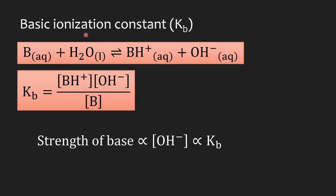For the basic ionization constant Kb, we represent a base as B. In water, the base accepts a proton from water, so the base becomes its conjugate acid — gaining one more proton with a positive charge — and hydroxide ion is released. The expression for the equilibrium constant is Kb, which equals the concentration of the conjugate acid multiplied by the concentration of hydroxide, divided by the concentration of the base, all at equilibrium. The strength of the base is related to the concentration of hydroxide and also to the value of Kb.